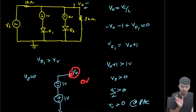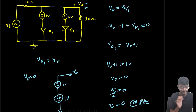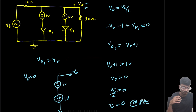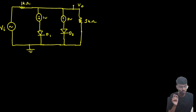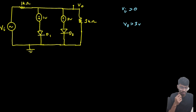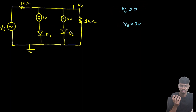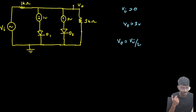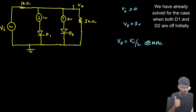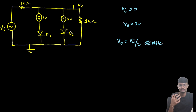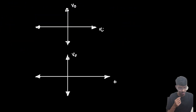When Vo is set to 0 volts, D2 can never turn on — D2 is given just as a distractor and does nothing here. So at the positive half cycle we get a 0 volt response. For the negative half cycle, D1 and D2 are both off, so Vo = Vi/2. This means for negative Vi we get negative Vo.